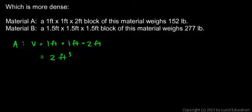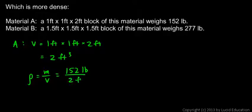So once we know the volume and the mass we can calculate the density. The density is mass divided by volume and the mass in this case is in pounds. 152 pounds divided by 2 cubic feet and that comes out to 76 pounds per cubic foot.